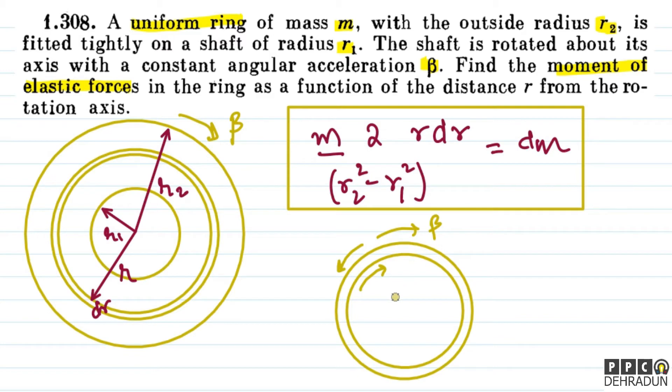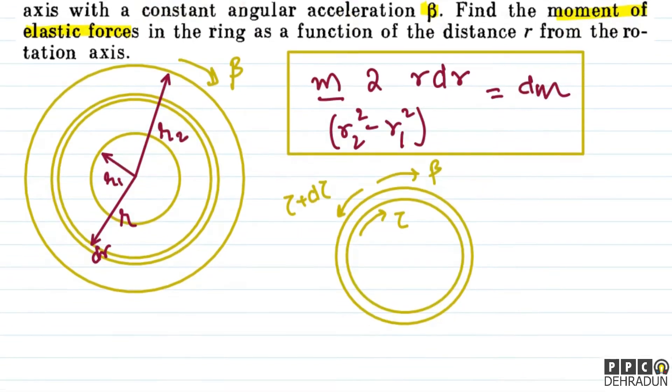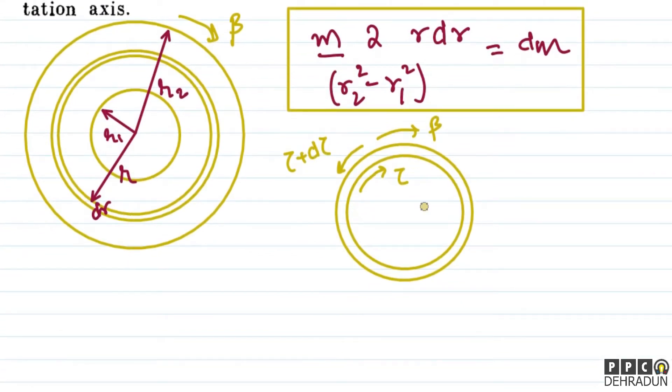So basically, we can assume that at radial distance r the torque magnitude is tau, and at radial distance r plus dr the torque magnitude is tau plus d tau. These two torques together are making this ring rotate with beta angular acceleration. As we can see in the diagram, we can say the net torque is minus d tau, which is causing this elemental ring to rotate with constant angular acceleration beta.